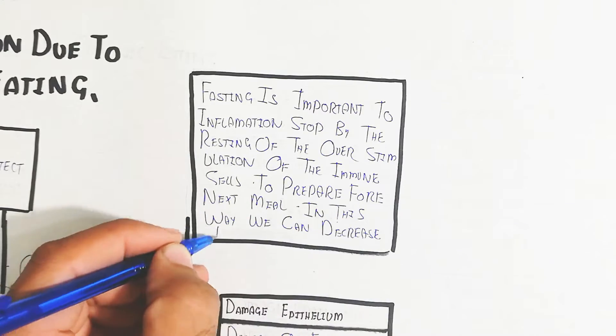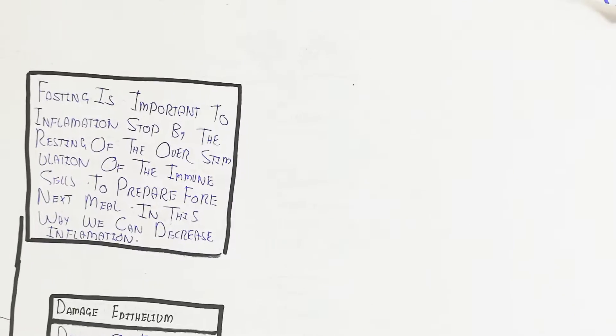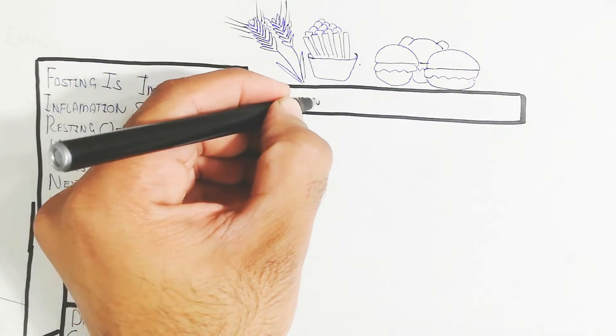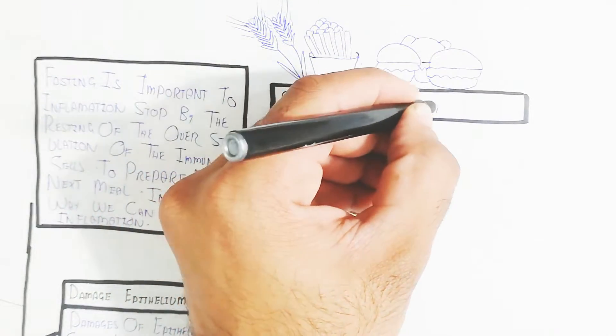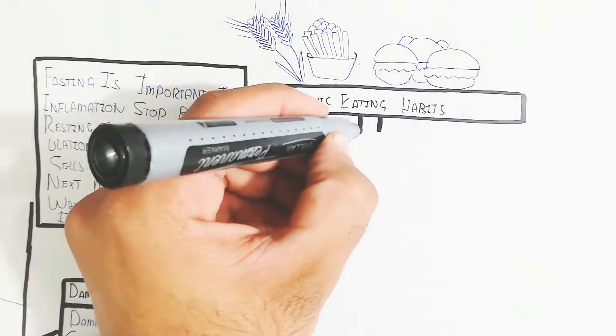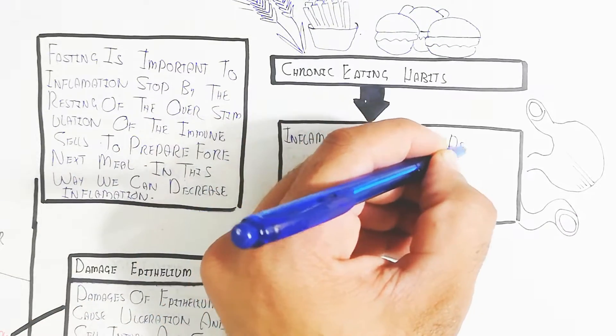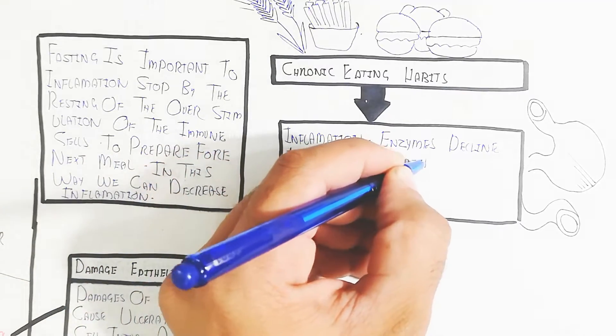In this way, fasting is important to stop inflammation by resting and stopping overstimulation of immune cells to prepare for the next meal. In this way we can decrease inflammation and autoimmune disorders. The chronic eating habit leads to autoimmune disorders in the current decade.